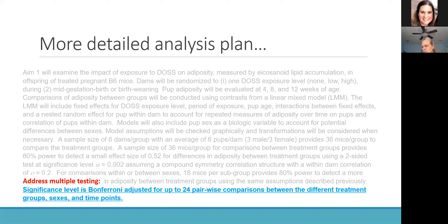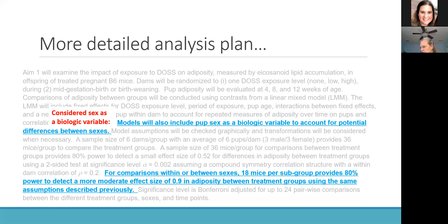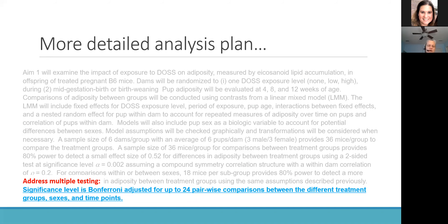Finally they address multiple testing. Imagining three different exposure levels of DOS, two different timings of dam exposure, and three different time points at which pups were measured, they do a Bonferroni correction. The significance level shown is alpha 0.002 — they've accounted for the multiple pairwise comparisons they're going to make to ensure sufficient statistical rigor and that the conclusions they draw are rigorous.